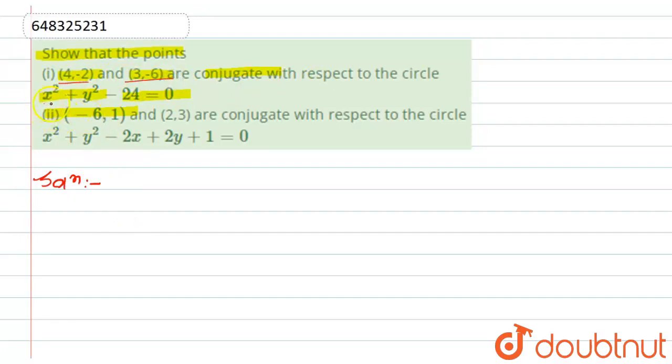The points are conjugate with respect to this equation of the circle, and these two points are conjugate with respect to this equation of the circle. So let us start with the first one.